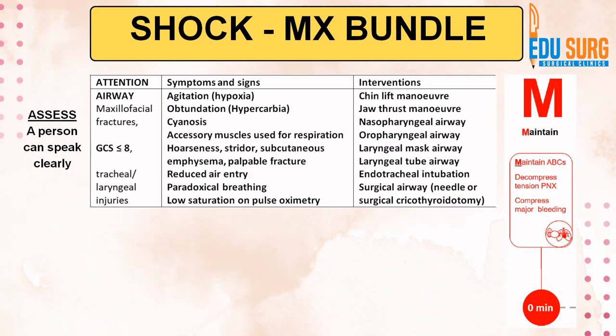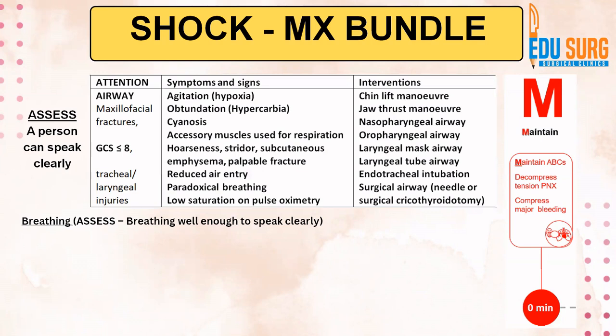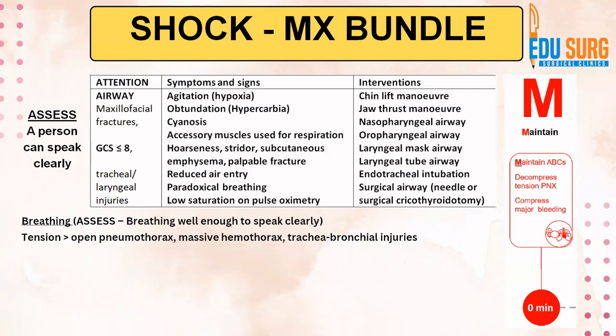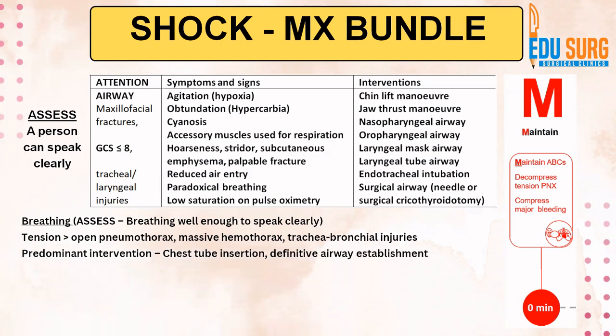Interventions for airway include chin lift, jaw thrust, nasopharyngeal or oropharyngeal airway, laryngeal mask airway, laryngeal tube airway. Definitive airways can be endotracheal intubation or needle or surgical cricothyroidotomy. When we assess breathing, we check if the patient is breathing well enough to speak clearly. Issues include tension or open pneumothorax, hemothorax, or tracheobronchial injuries. The predominant intervention for breathing is chest tube insertion or definitive airway establishment.